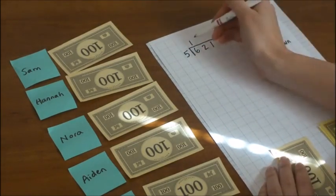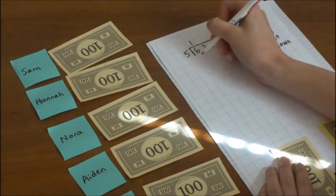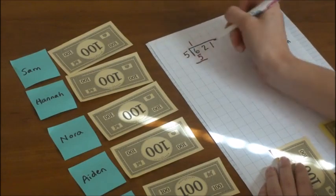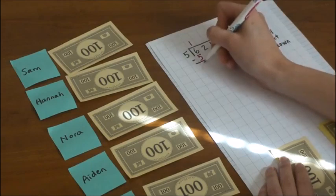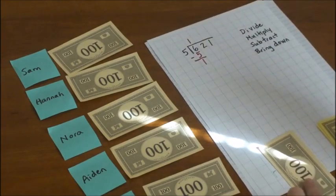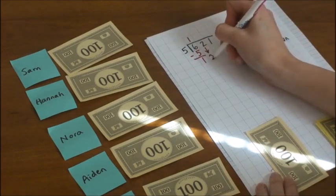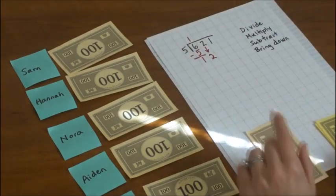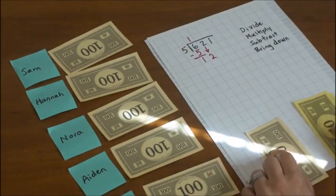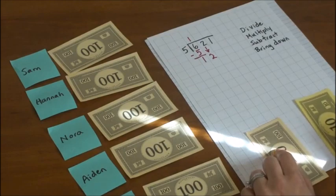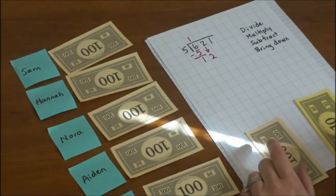So to record what we did, we'll say that each child got 100. That's the dividing. We multiply to see how many we gave out. 1 times 5 equals 5. We subtract to see how many are left. That's this 100 down here. And now we bring down the two tens.